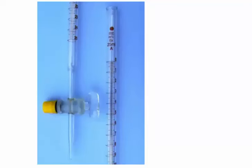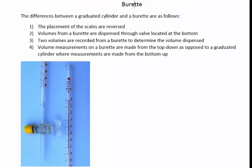The volumes from a burette are dispensed through a valve located at the bottom. Two volumes are recorded from a burette to determine the volume dispensed. Volume measurements on a burette are made from the top down, as opposed to a graduated cylinder, where measurements are made from the bottom up.